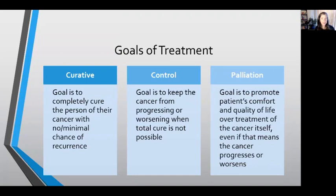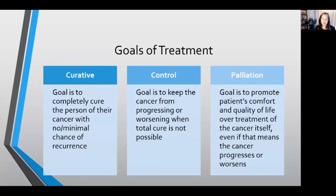The goal of treatment may be different depending on the diagnosis or how extensive the cancer is. Ideally, the goal of every treatment would be to cure the cancer — to treat the patient with no or minimal chance of recurrence, getting the cancer removed from the body with a very low chance of it coming back. Unfortunately, that is not always a feasible goal. Sometimes the goal of treatment is to control — to keep the cancer from progressing when a total cure is not possible, maintaining a state where the patient can have several months to several years of a good quality of life.